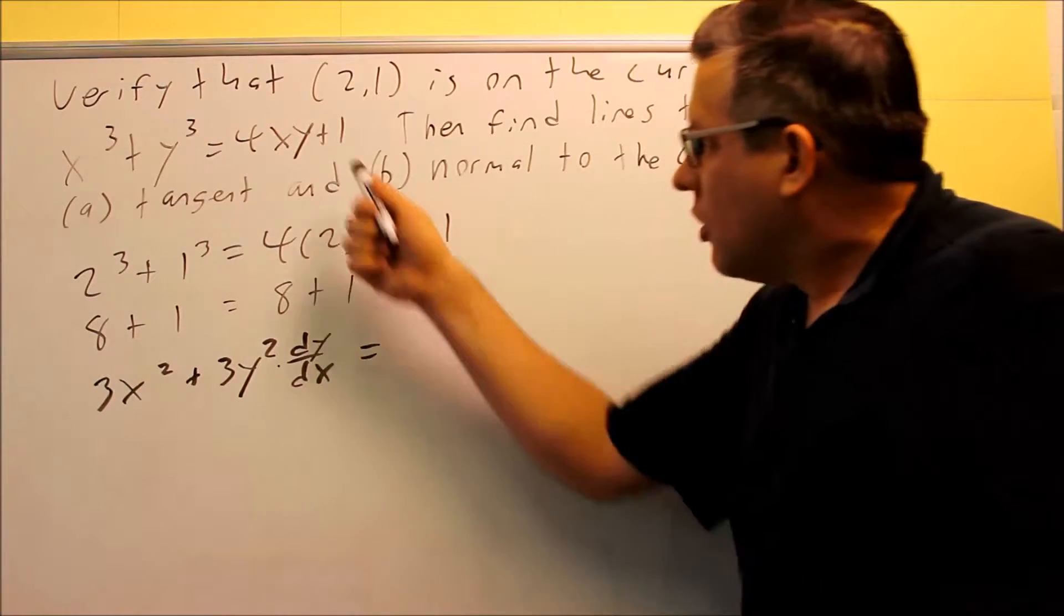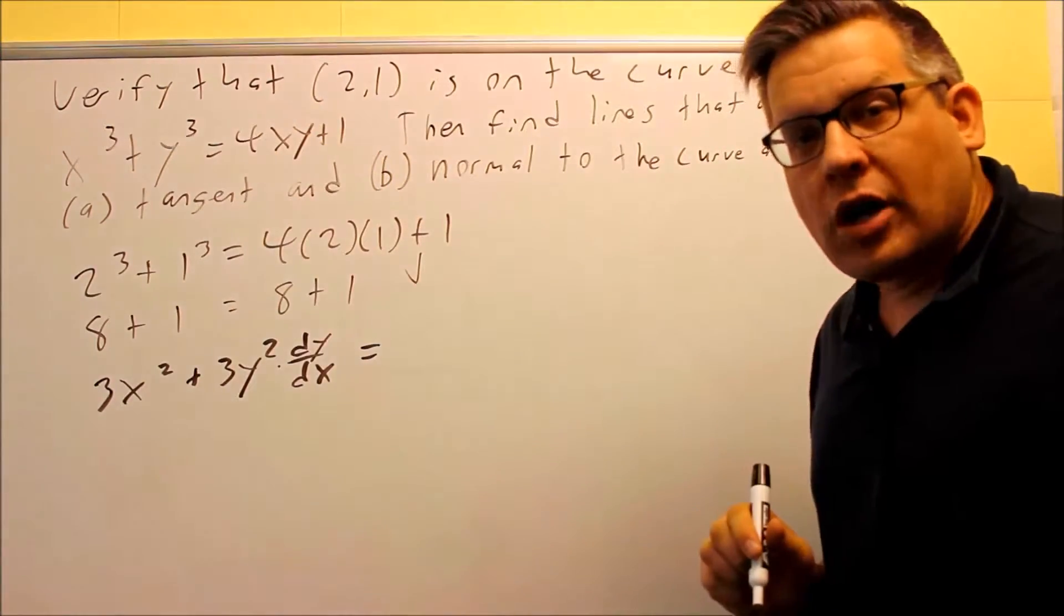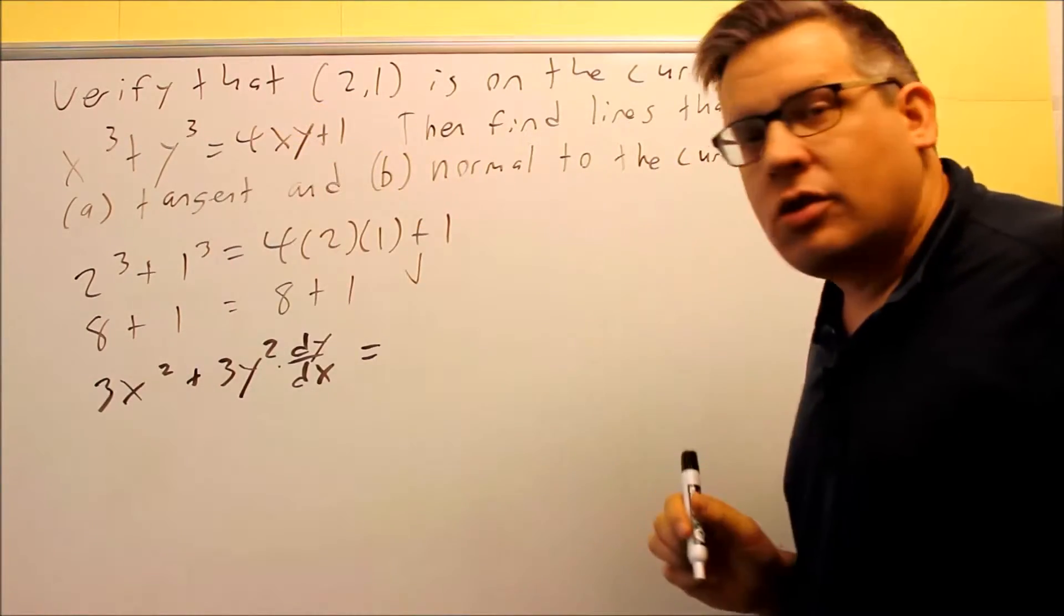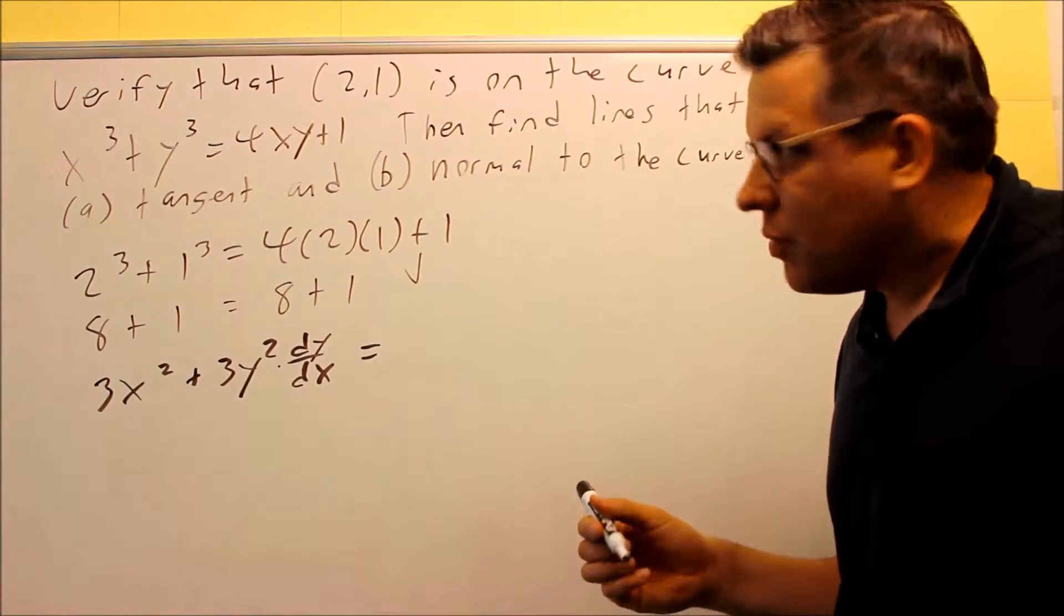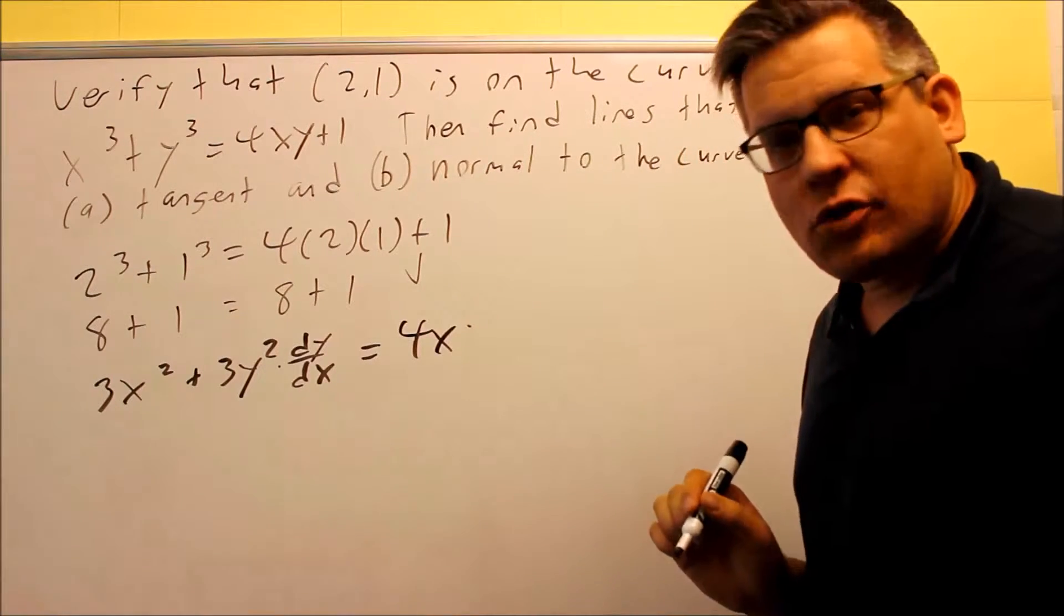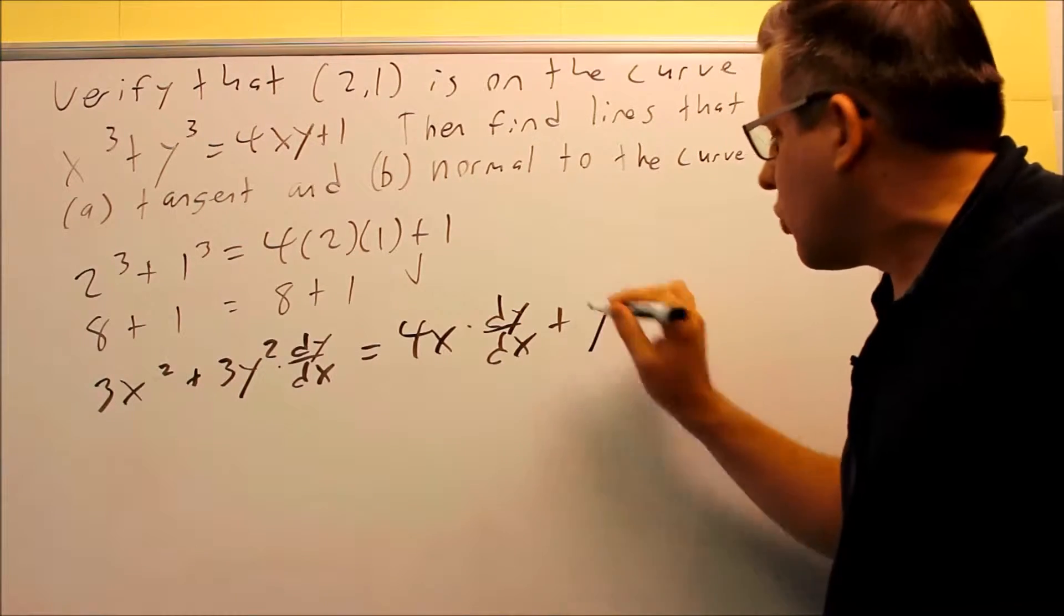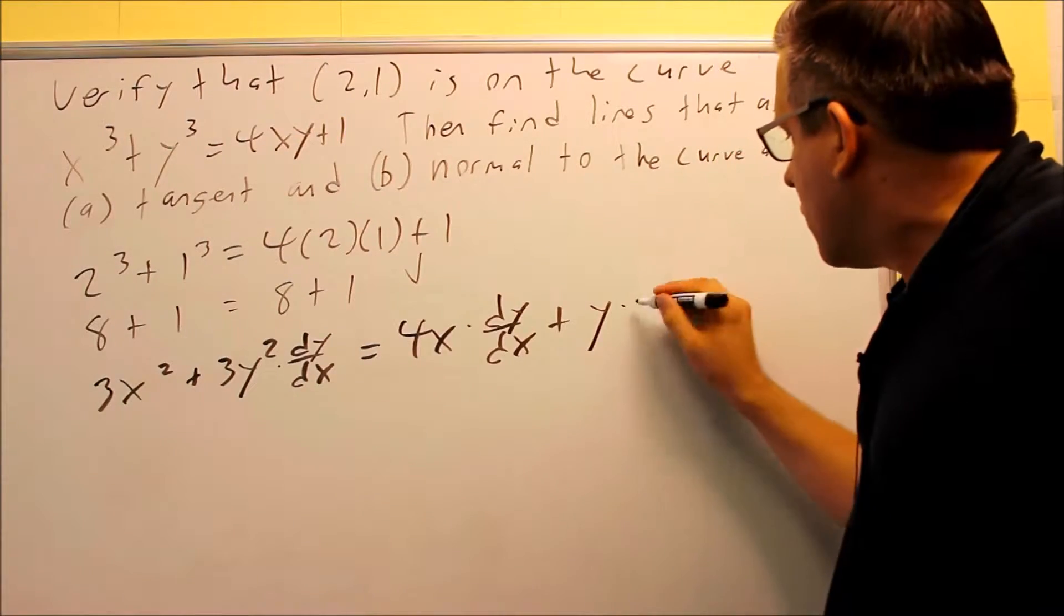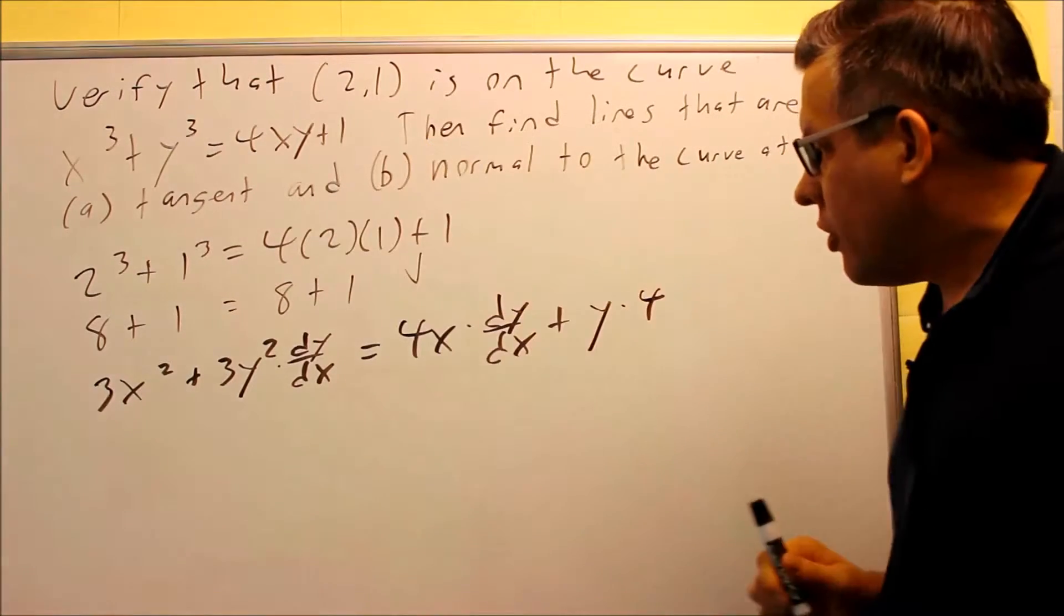On the other side, we have a 4x times y. This is something that requires a product rule. The derivative of 1 is going to be 0, so all we have to be concerned about is just doing the derivative of 4xy. So 4x is our first term, and y is our second term. Let's put that into the product rule formula. We have first term times the derivative of the second. The derivative of y is dy dx, plus the second thing, which is y by itself, times the derivative of the first. The derivative of 4x is just going to be 4, and the derivative of 1 is going to be 0 there.